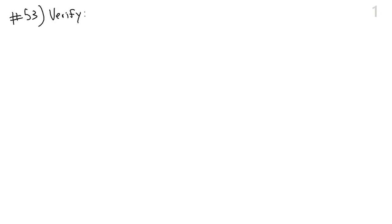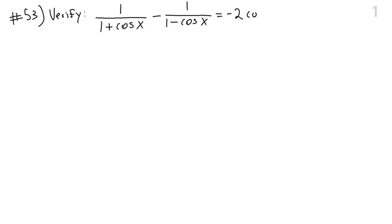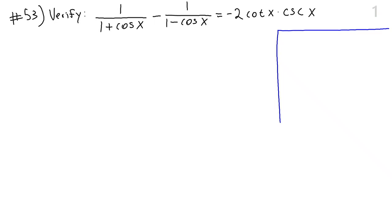Whenever we're asked to verify something, we must be very careful of what we actually write down. We cannot use what we're trying to verify to show that it is true. We always start on one side and work our way to the other side. Every single equals sign in your sequence of equations should be either because of algebra or because of some trig identity.